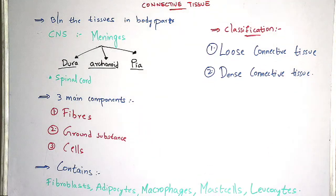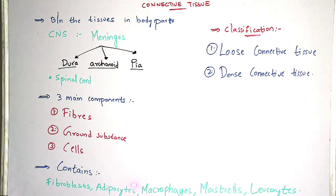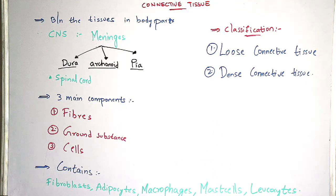Coming to the fourth one — mast cells. Macrophages are a type of WBC cells mainly present in the immune system, and their main function is the digestion of foreign materials like microorganisms. Mast cells consist of granules which are mainly rich in histamine and heparin.